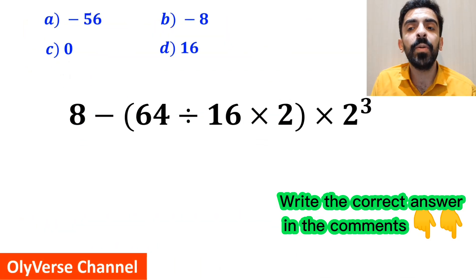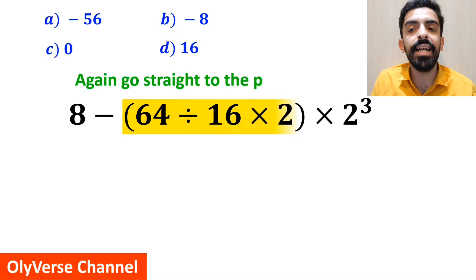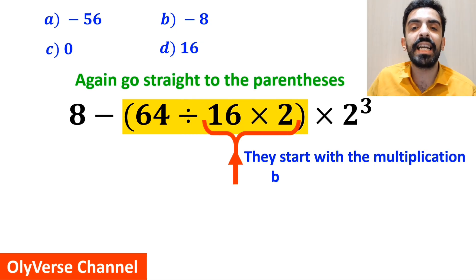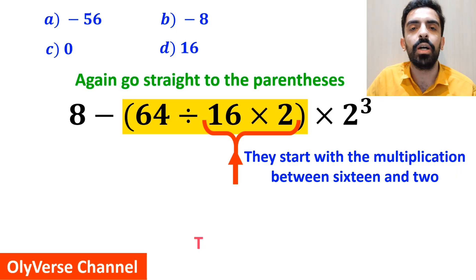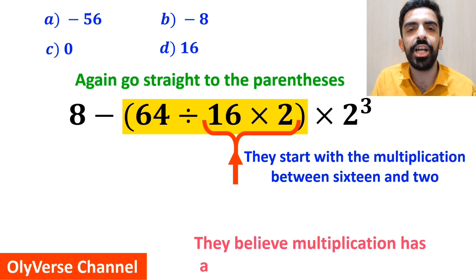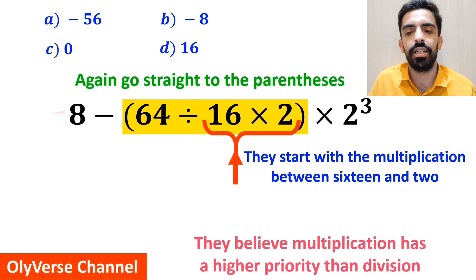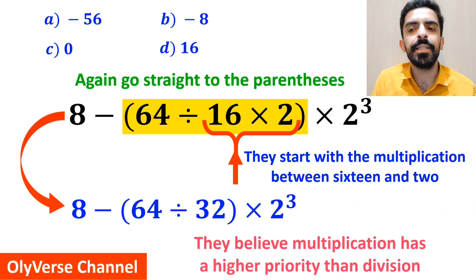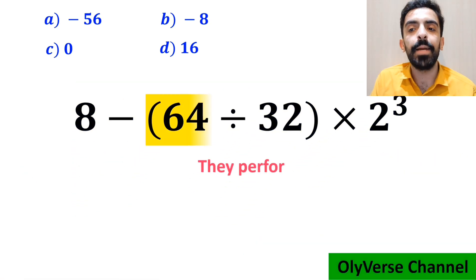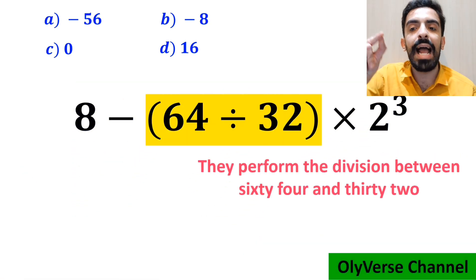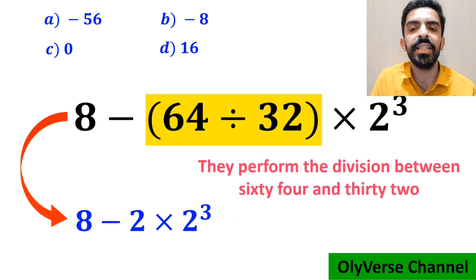Some other people, when solving this question, again go right to the parenthesis, but this time they start with the multiplication between 16 and 2 because they believe multiplication has a higher priority than division. So they rewrite this expression as 8 minus 64 divided by 32 inside the parenthesis, multiplied by 2 cube. In the next step they perform the division between 64 and 32 and simplify to 8 minus 2 multiplied by 8.